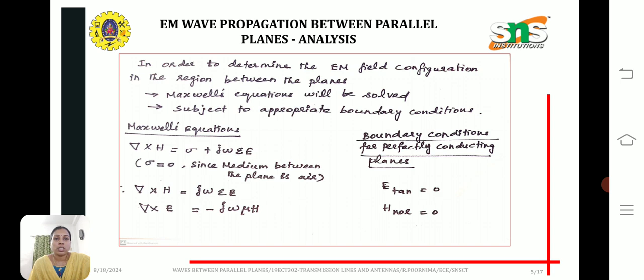Del cross h equal to sigma plus j omega epsilon e. Sigma equal to 0 since the medium between the planes is air. For the air medium, the conductivity is 0, so sigma is 0.